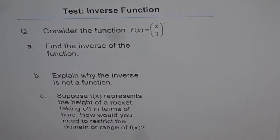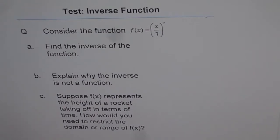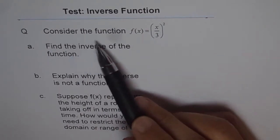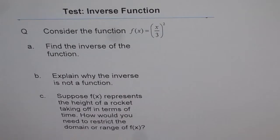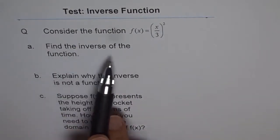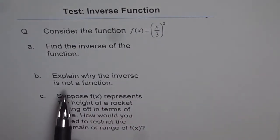This is a very interesting series where I am trying to take some examples related to inverse of functions. Quadratic functions are very fascinating, and I have found students making a lot of mistakes while finding their inverse. We will highlight some of these mistakes during the solution. The question here is: consider the function f(x) = (x/3)². Find the inverse of the function and explain why the inverse is not a function.